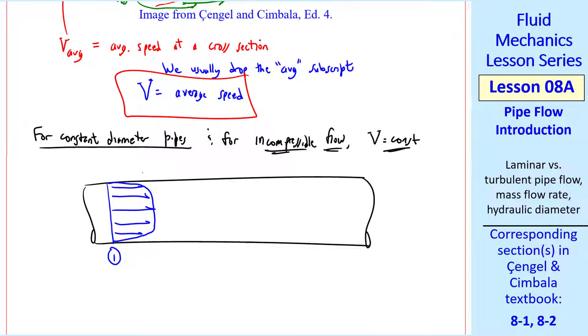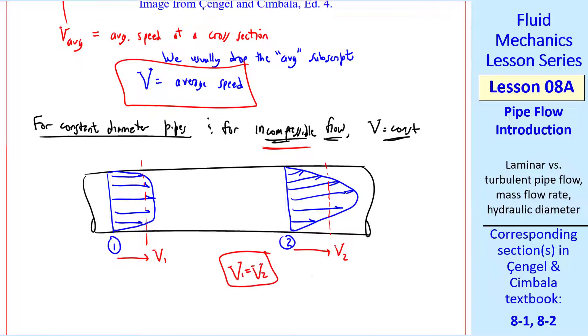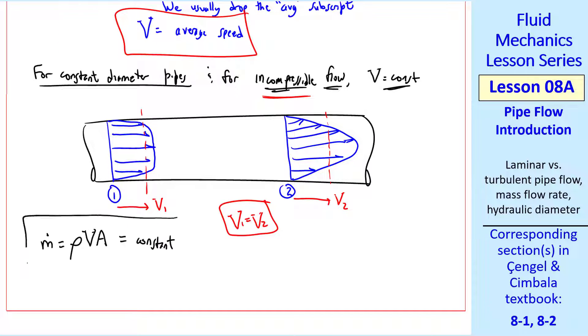If this is our constant diameter pipe, and location 1 is near the entrance, you might see a velocity profile that looks like that, with average velocity V1. Further downstream, the profile has developed at location 2, so we have average speed V2. But if the flow is incompressible, these average speeds must be the same.